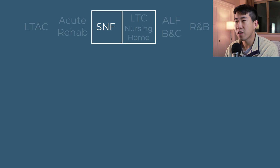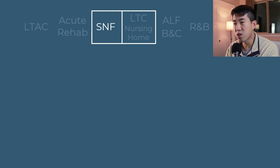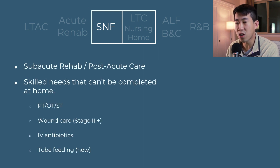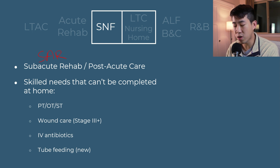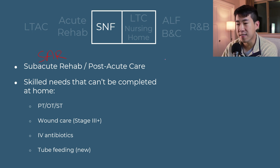Now we're going to talk about probably the biggest category, which is skilled nursing facilities. One thing I want to clarify is that skilled nursing facilities have a lot of overlap with long-term care or nursing homes, and often they are actually in the same building. SNFs are also known as subacute rehab or SAR, and also known as post-acute care. This is definitely for any patients that have skilled needs that can't be completed at home, whether they are not independent enough or not safe enough to do it at home.